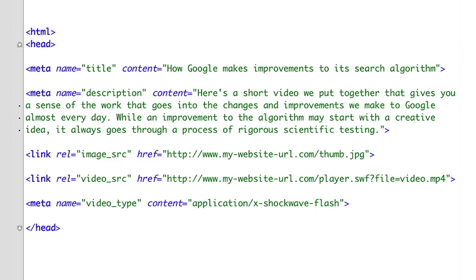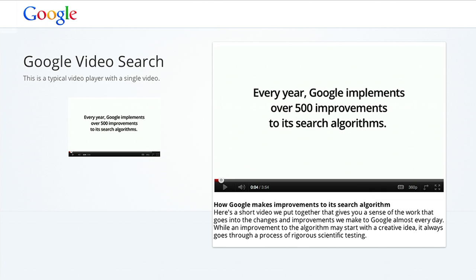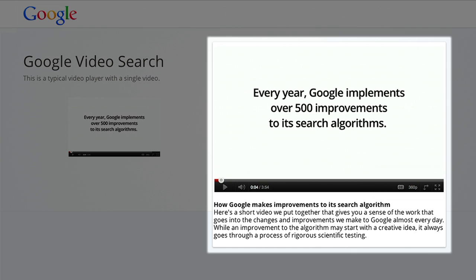Facebook Share, Open Graph, and Yahoo RDFA tags on video pages will automatically be detected when Google crawls the page. Since Share and Open Graph tags are in the header, they can describe only one video per page. If there are multiple videos on the page, make sure that the tags mark up only the most prominent video.